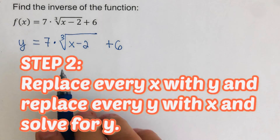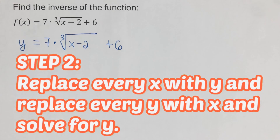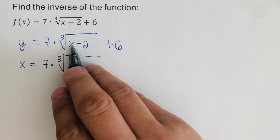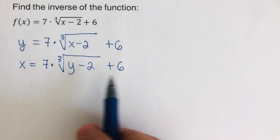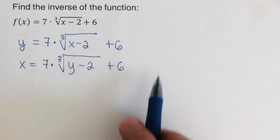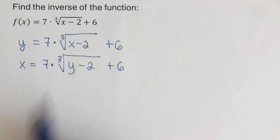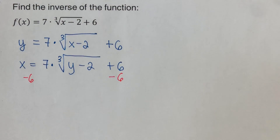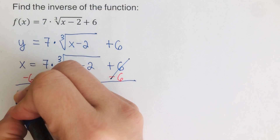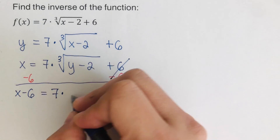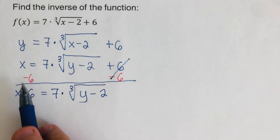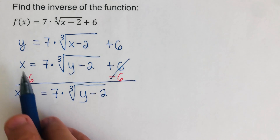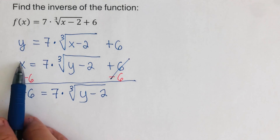The second step is to replace every x with y and every y with x, and solve for y. Our y becomes an x: x is equal to 7 times the cube root of y minus 2, plus 6. Our target is to solve for y. First, subtract 6 from both sides, giving us: x minus 6 is equal to 7 times the cube root of y minus 2. Note that x minus 6 are unlike terms and cannot be combined.